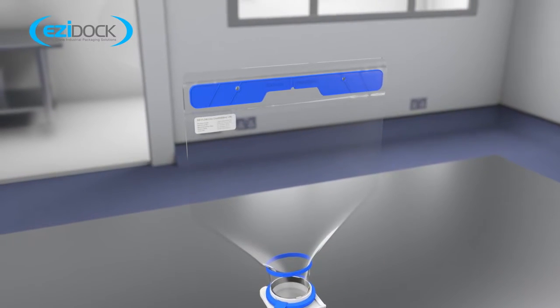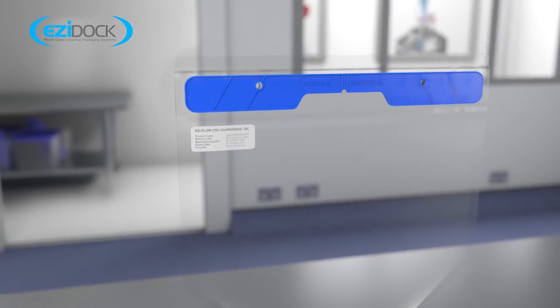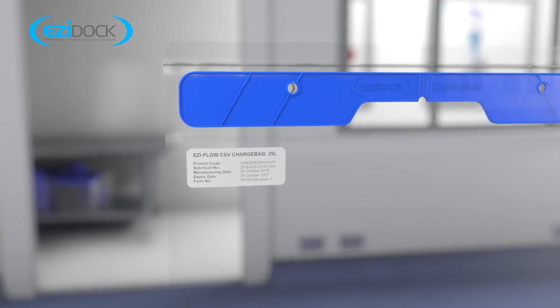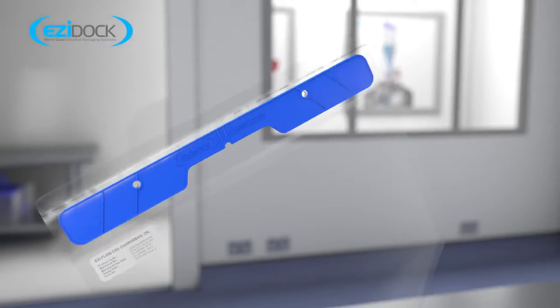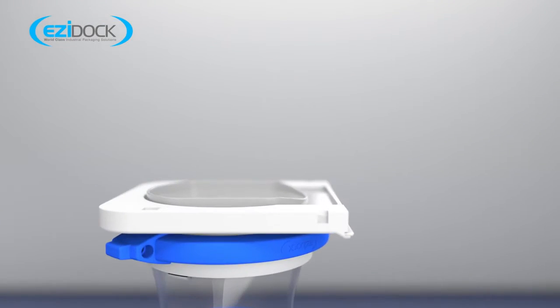Each charge bag has a clear ID label showing all manufacturing details including batch and lot number, part number, charge bag volume, as well as production and expiry dates. The EasyFlow CSV passive has a manual interlock which prevents the passive slider from being removed.